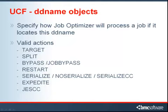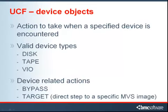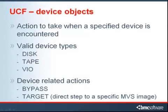Other actions are available, and you can see those in the documentation. You can tell the Job Optimizer what action to take when a specific device is encountered. You can bypass or target a device. When you target a device, you can direct a job or job step to a specific ZOS image. Valid device types are disk, tape, and VIO.